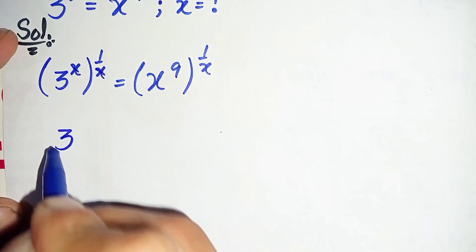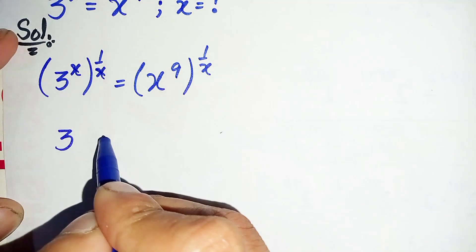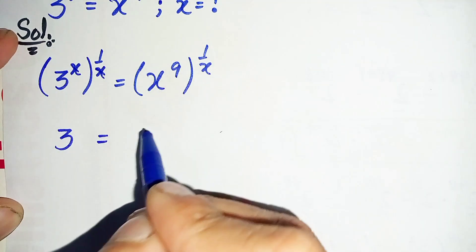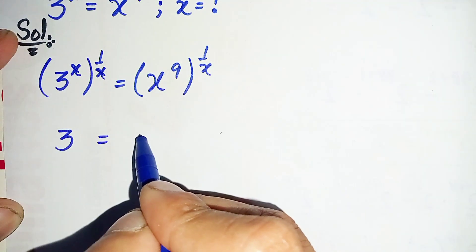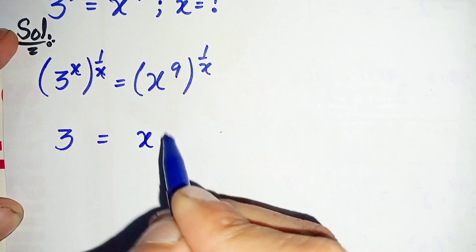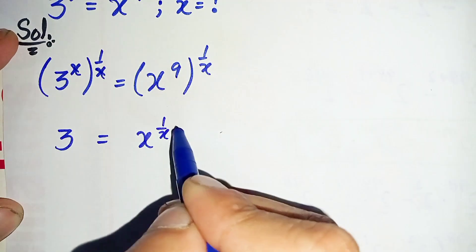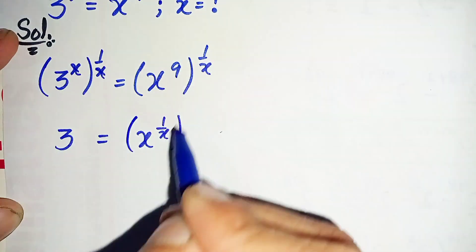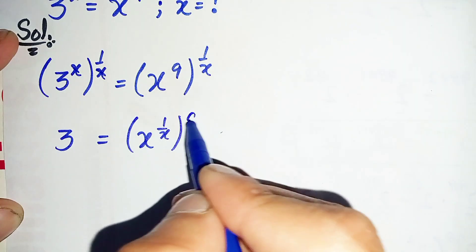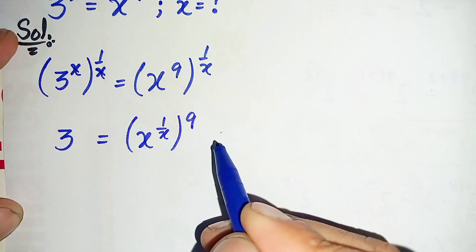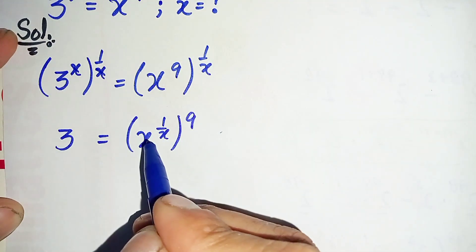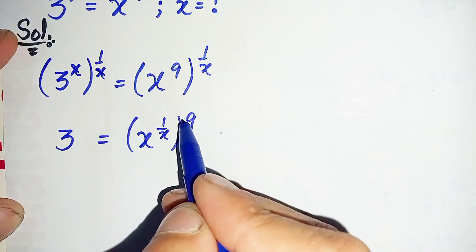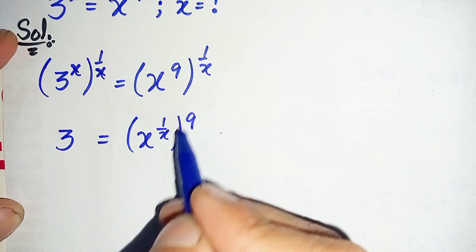So this equation will become: on the left hand side only 3 will be left, and on the right hand side this will become x raised to power 1 over x, all raised to power 9.